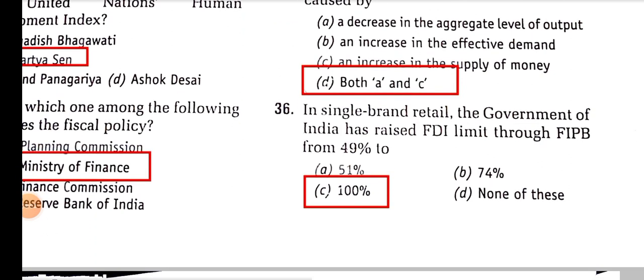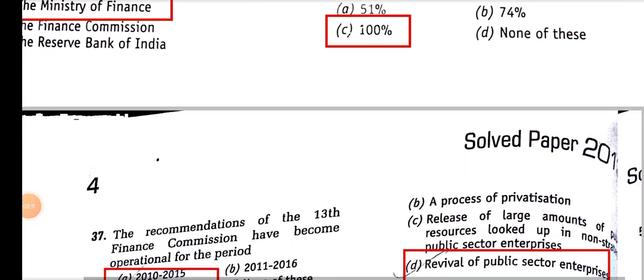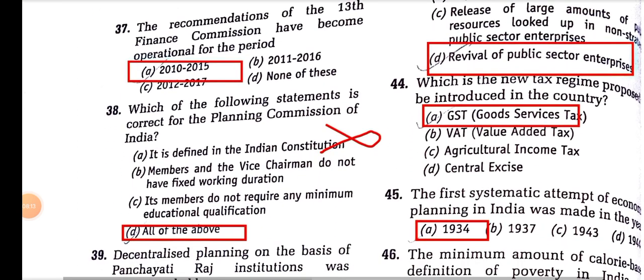For single brand retail, the Government of India has raised the FDI limit via FIPB from 49% to 100%. The recommendations of the 13th Finance Commission became operational for the period 2010 to 2015.